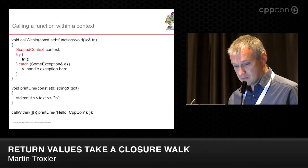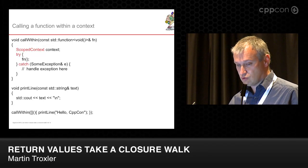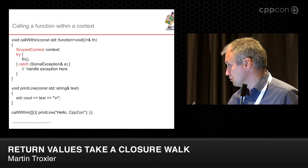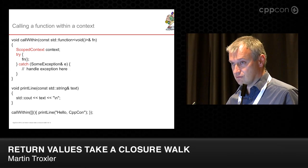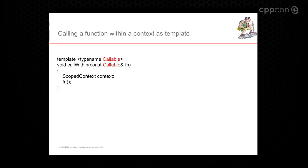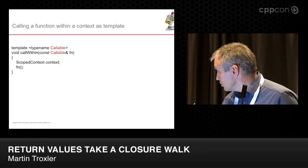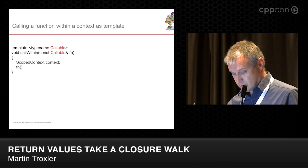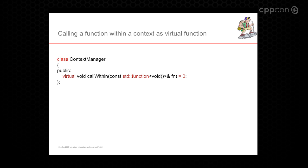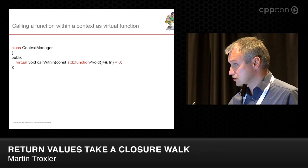You basically call a function within a try-block, or you make a scoped context — it could be something like a mutex, or even a very complex database access. Why did I not choose to make this call-within function as a template? Because it would be faster and the complete type of the given function would be deducible, but the reason is that we want to decouple the implementation of this call-within function. That is also the reason that I have to use a std::function to erase the concrete type.